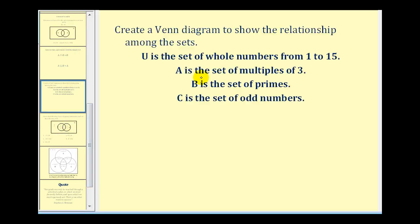We first want to create a Venn diagram to show the relationship among the sets, where the universal set U is the set of whole numbers from one to fifteen, A is the set of multiples of three, B is the set of primes, and C is the set of odd numbers.